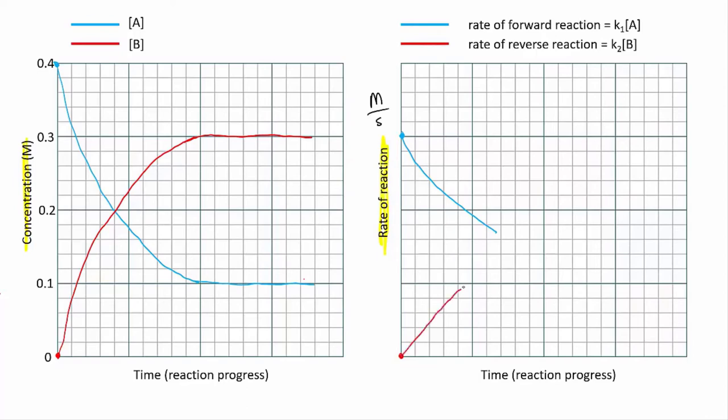Simultaneously, the concentration of B is climbing, so the rate of the reverse reaction climbs. This continues until the rate of the forward reaction equals the rate of the reverse reaction.